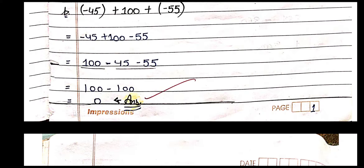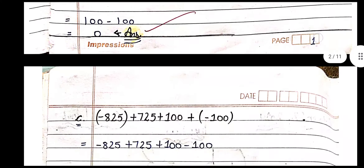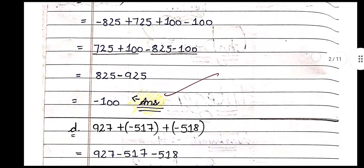When integers have the same sign, we add them and the sign of the result is the same as their sign. So minus 45 and minus 55: 45 plus 55 equals 100, and since both are negative, the answer is minus 100. Now 100 positive and 100 negative — different signs, so take the difference. All the solutions for sum number 3 are given.